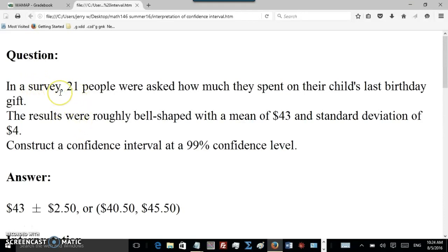Well, everyone's numbers were different, but here's an example of the question. In a survey, 21 people were asked how much they spent on their child's last birthday gift. The results were roughly bell-shaped with a mean of $43 and a standard deviation of $4. Construct a confidence interval at the 99% confidence level.